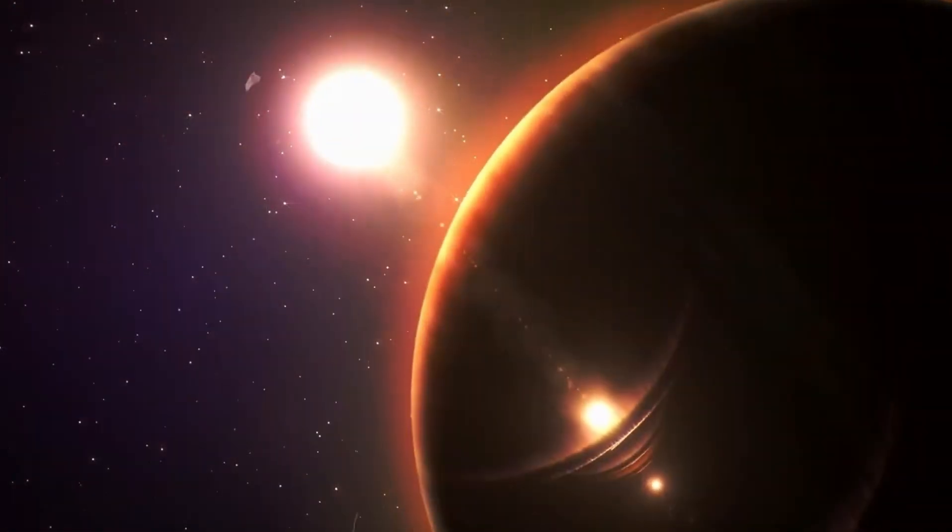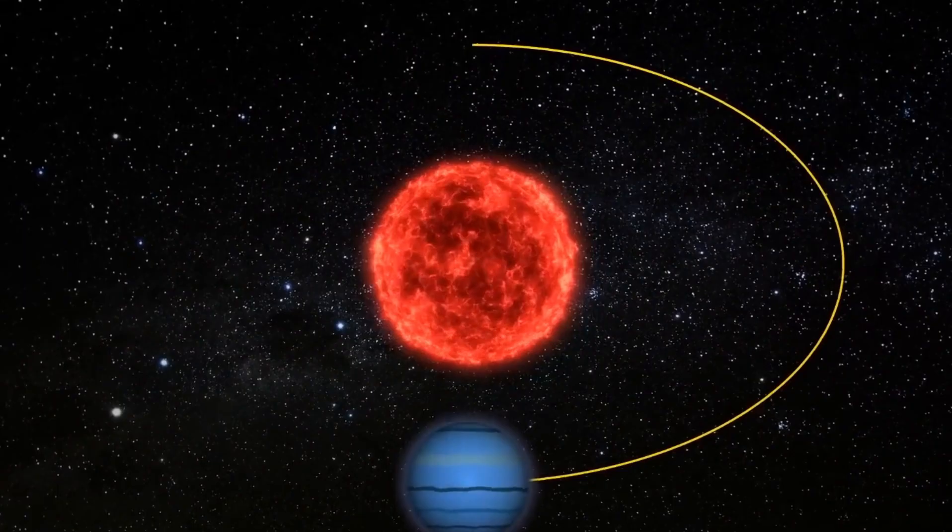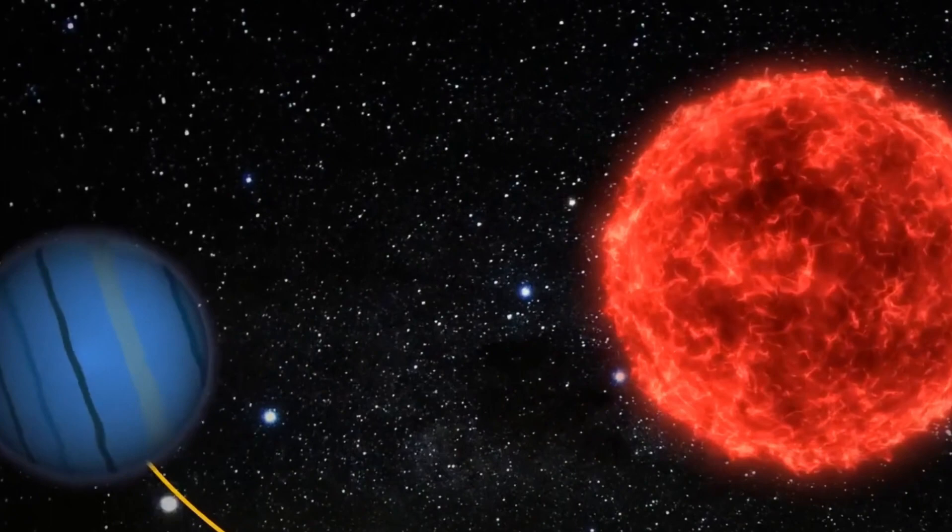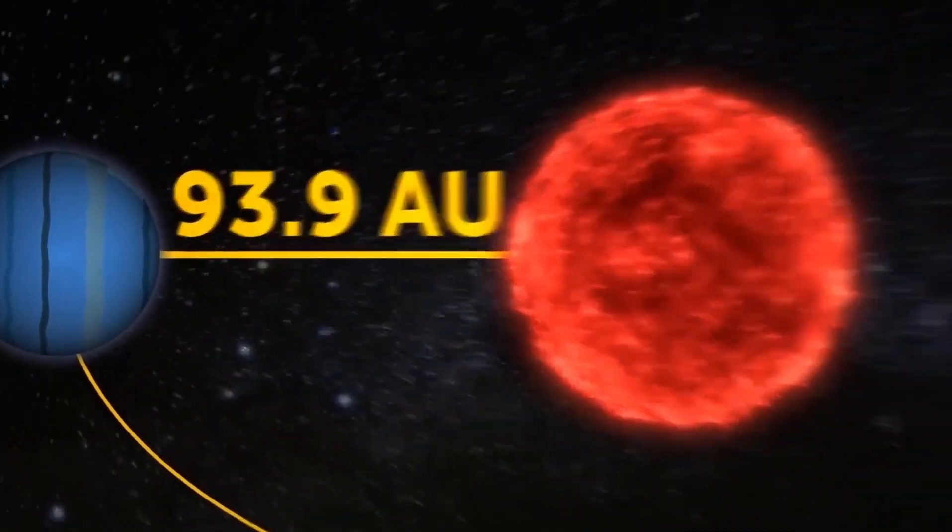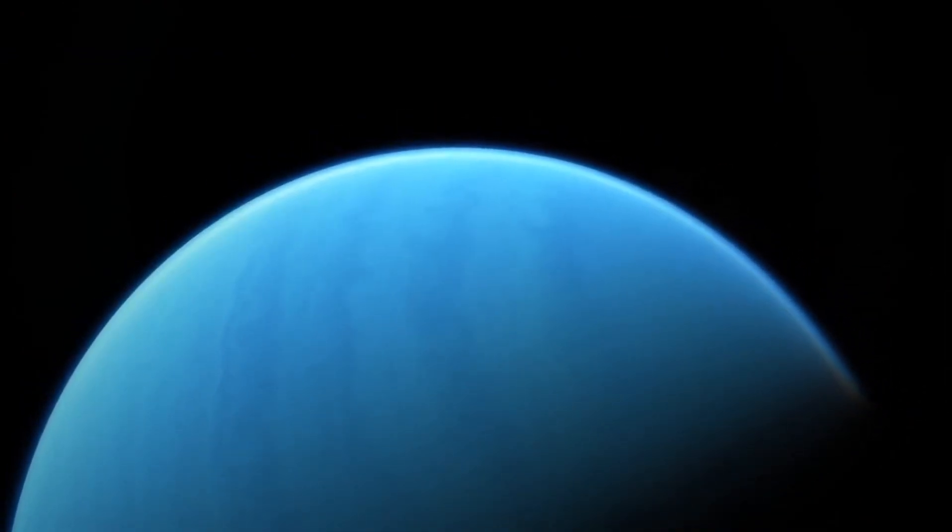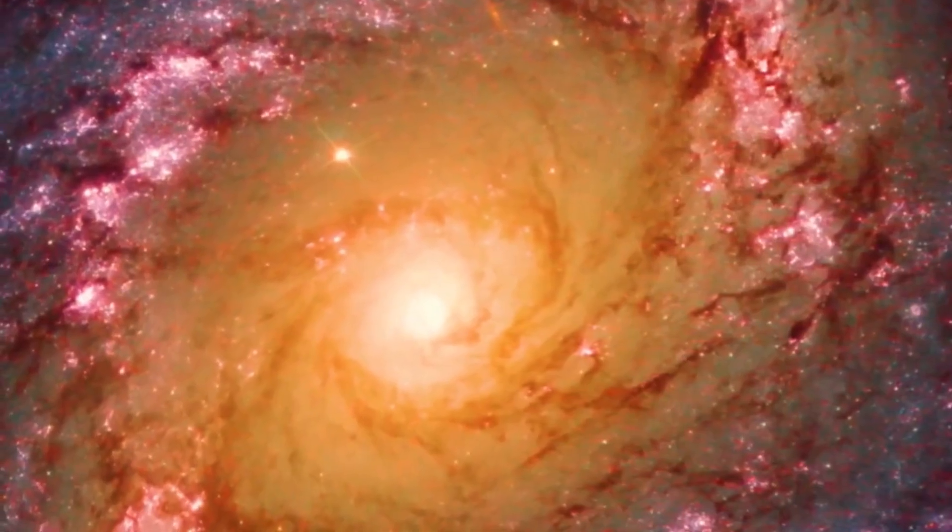The disk instability approach, in contrast, is a top-down model in which gravity causes a huge disk surrounding a star to quickly shatter into one or more planet mass fragments as the disk cools.